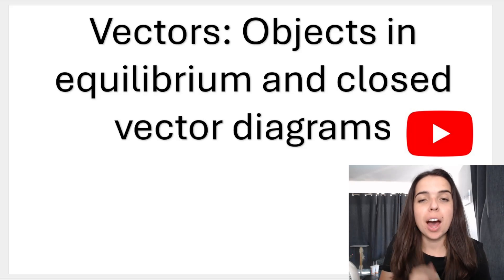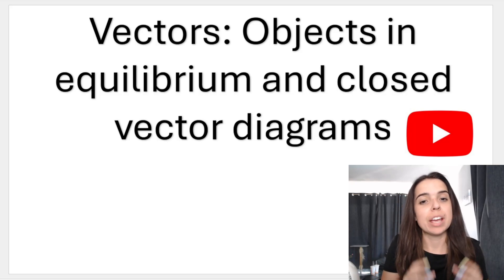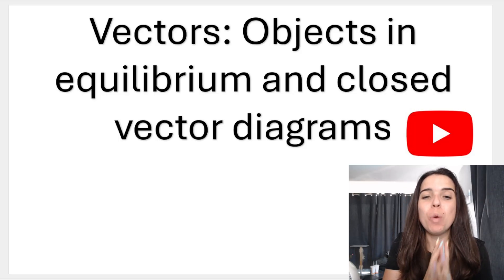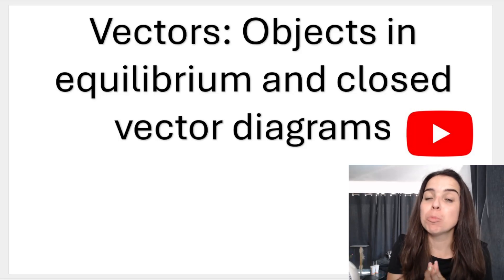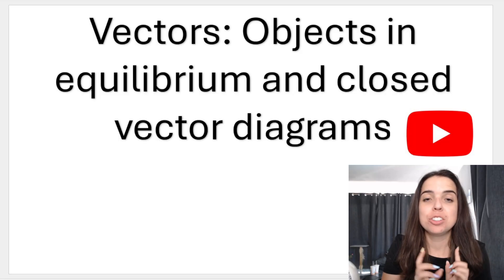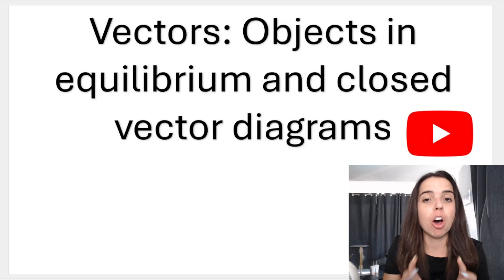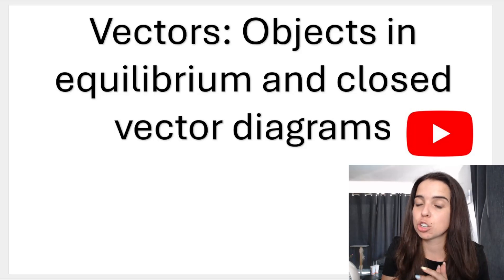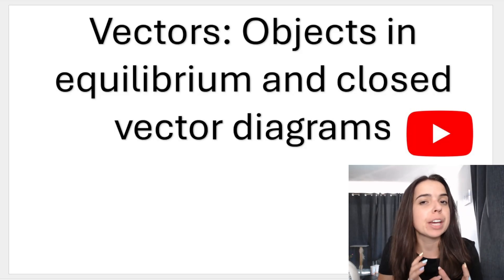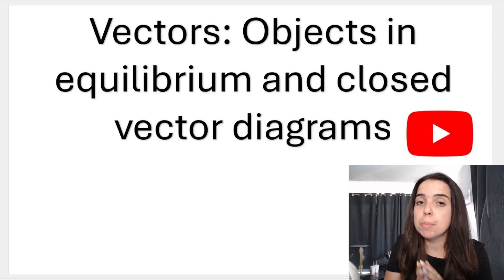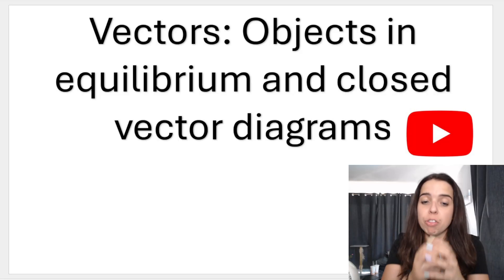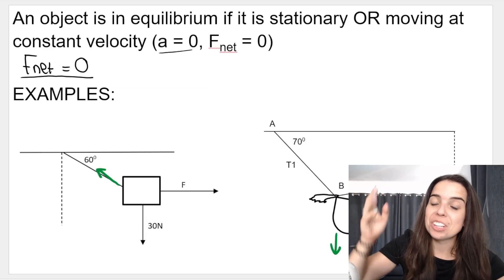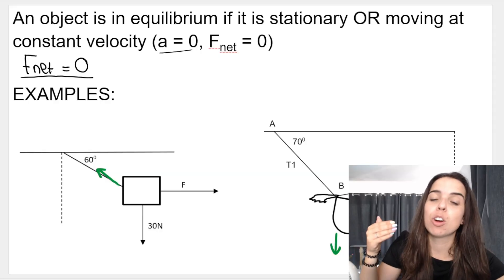In this video, I'm going to be showing you how to draw a closed vector diagram or a triangle of forces when we have objects that are in equilibrium or forces that are in equilibrium. I did do a video on objects in equilibrium already, so if you missed that one, check out the playlist — links in the description box below. As a quick recap, an object is in equilibrium if the net force acting on that object is zero, which means the object is stationary or moving at a constant velocity.